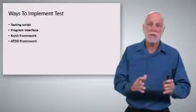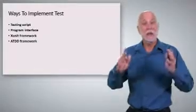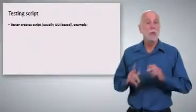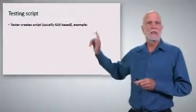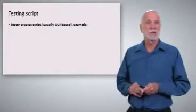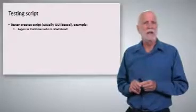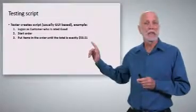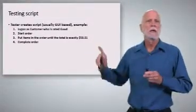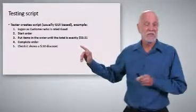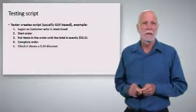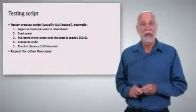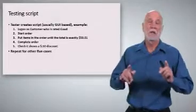Suppose that these tests for the business rule were not created until after the code was implemented. Then chances are the only way you'll be able to test it is through a testing script. How does this happen? Well, the tester is going to create a script, usually it's UI based, and log on a customer's rated good, start up an order, put enough items in the order until the total is exactly $50.01, complete the order, and make sure that it shows a $0.50 discount, which is 1%. Great, we've got one. Now we just have to repeat it for five other cases. Carpal Tunnel Syndrome.